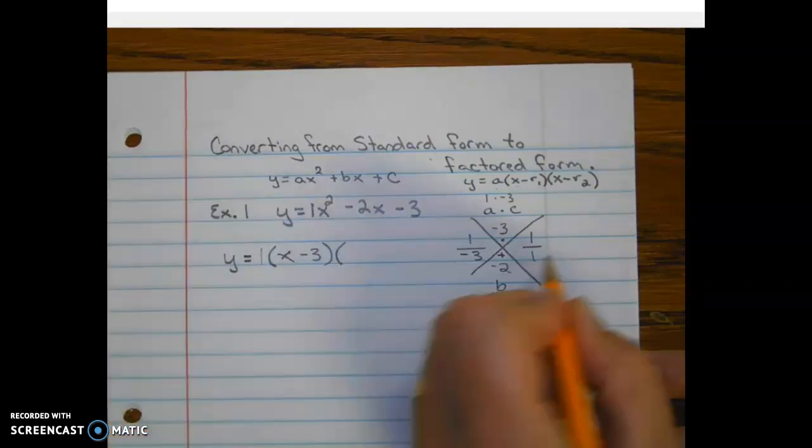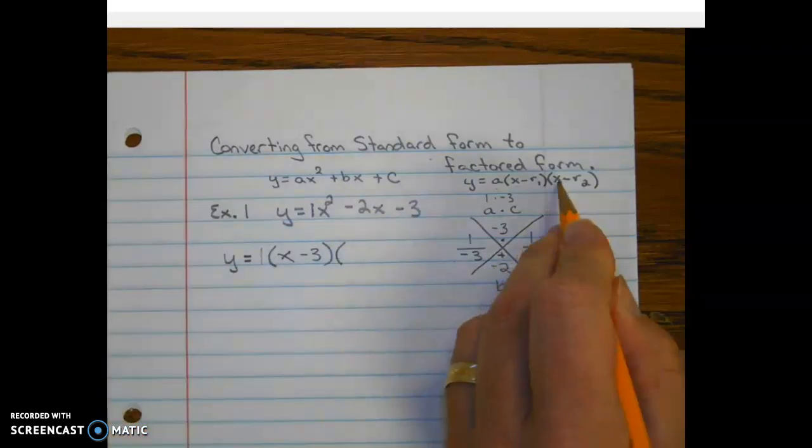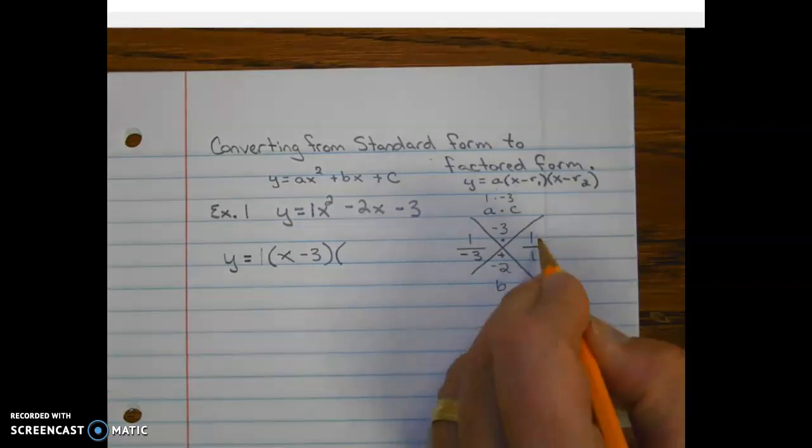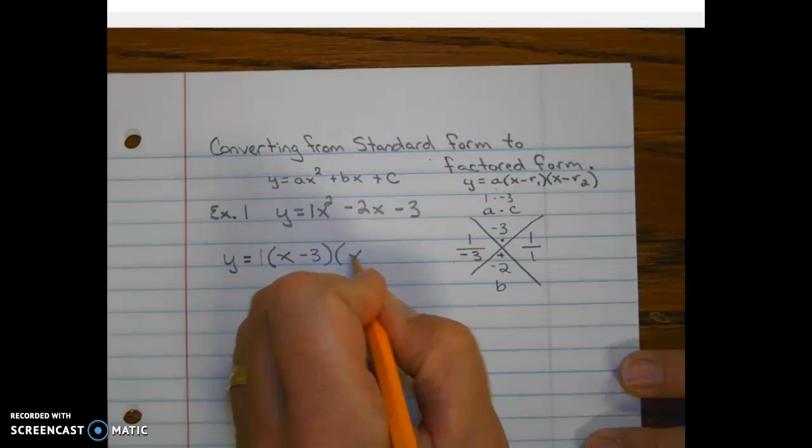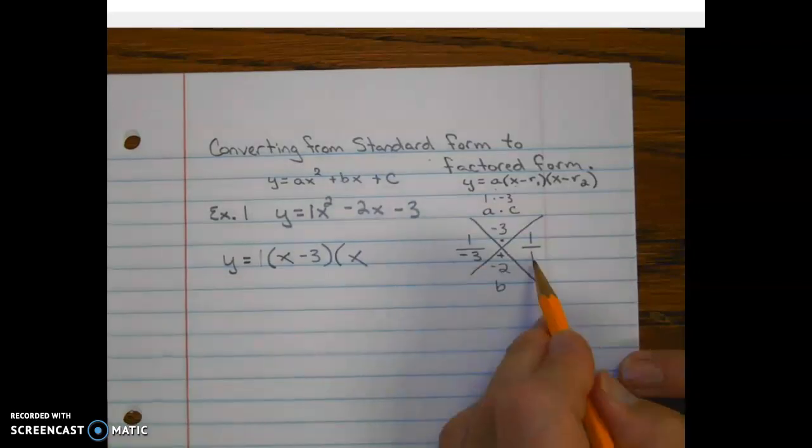And then the next one, so again, 1 is going to be the coefficient on the x term of this factor. So we have 1x minus 1.